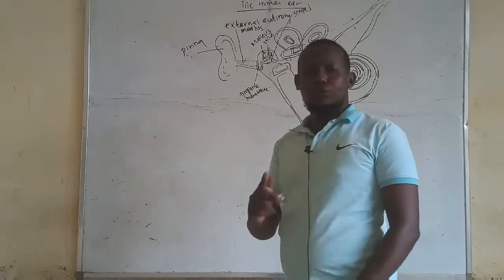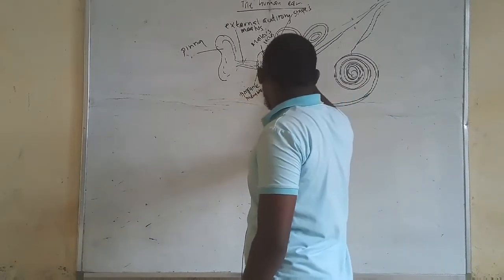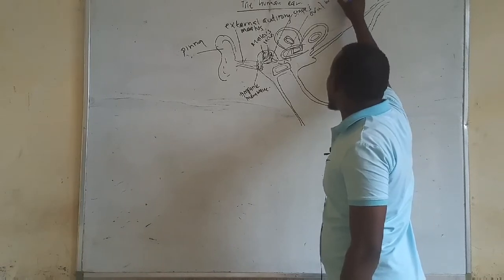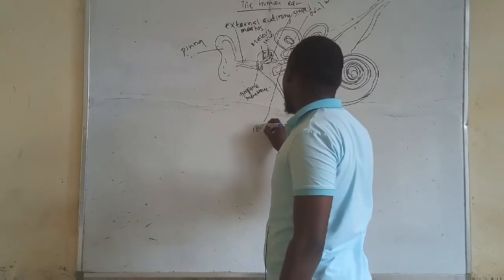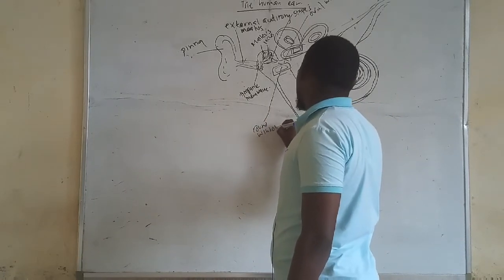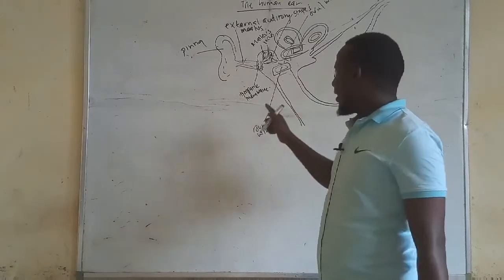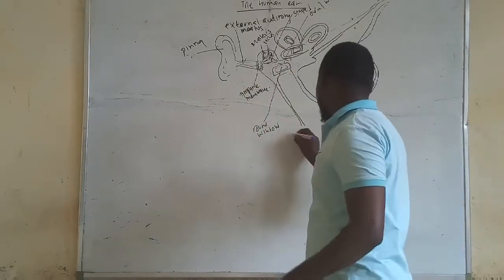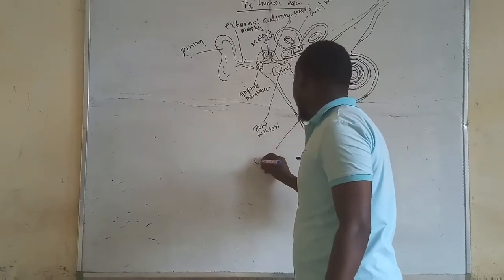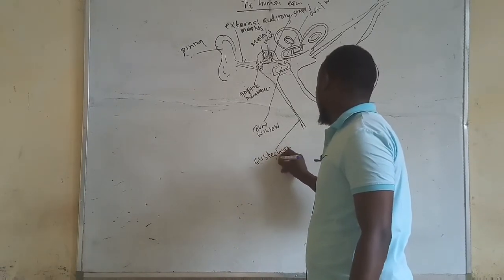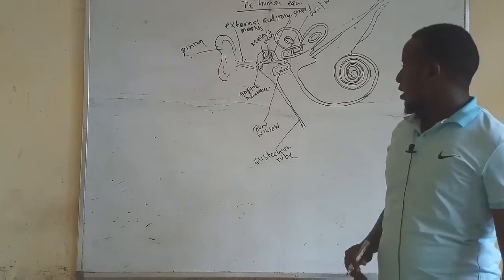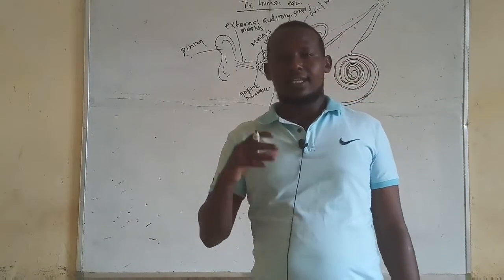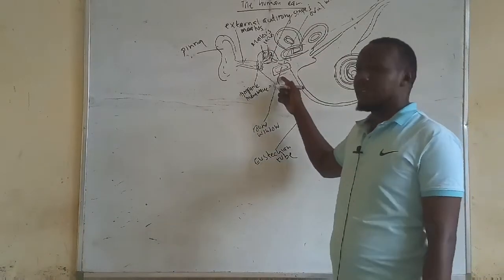Next to the ossicles, we have two windows: the oval window and the round window. We also have the tube which connects the middle ear to the pharynx, called the Eustachian tube. The main role of the Eustachian tube is to equalize the air pressure between the middle ear and outside the ear.